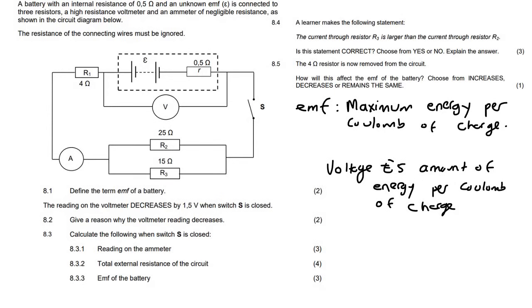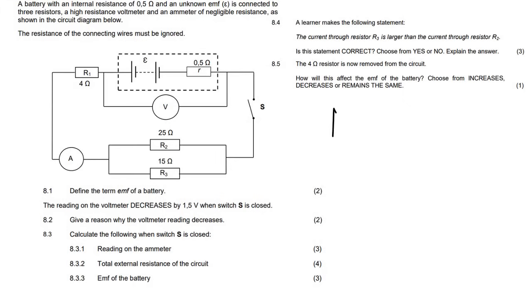The next question tells us the reading on the voltmeter decreases by 1.5 volts when the switch is closed. That sentence is very important. When you go to a shop and buy a 12 volt battery, that 12 volts is the EMF — the maximum amount of voltage that battery can give. Then you get home and build yourself an electric circuit.